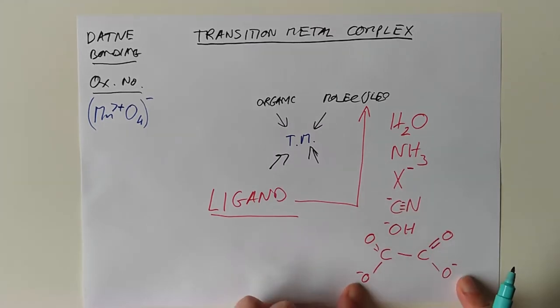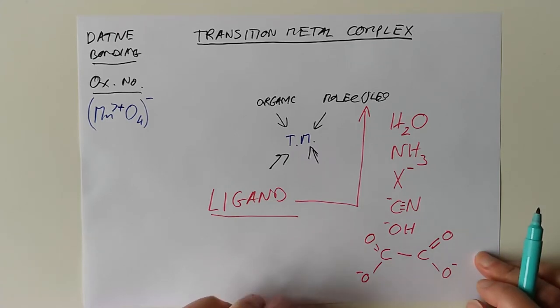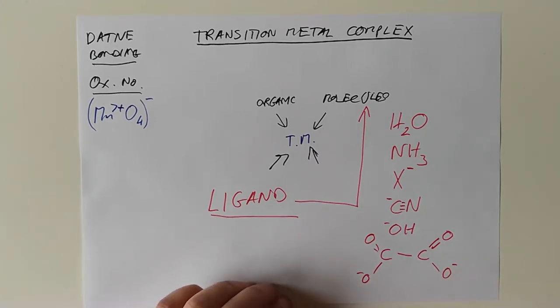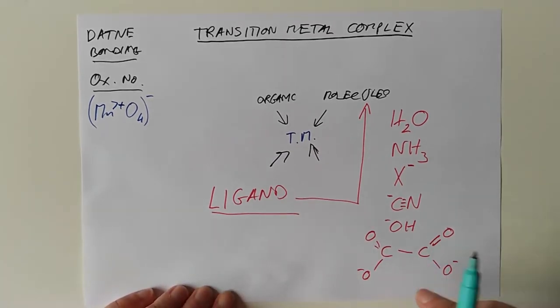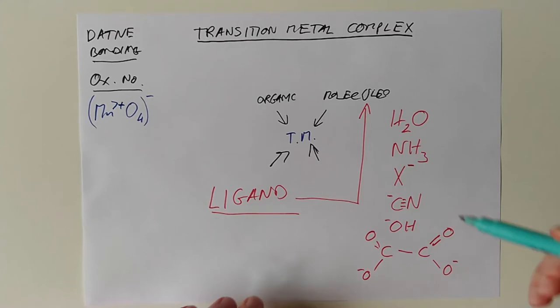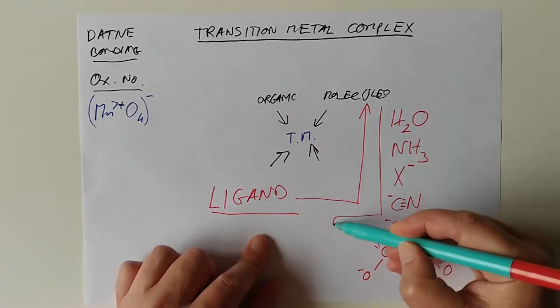And again, you would have two positive ions counterbalancing it. So sodium oxalate would be Na2. And then the formula of this guy here is C2O4 with two minus charge, of course. You find it in rhubarb leaves. Oxalic acid is in rhubarb leaves. That's why we eat the stems and not the leaves. Because this is a little bit on the poisonous side.